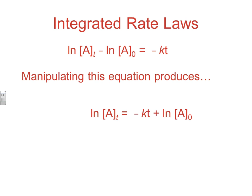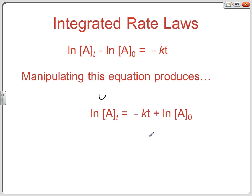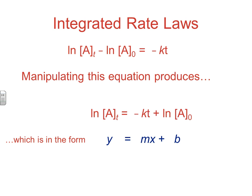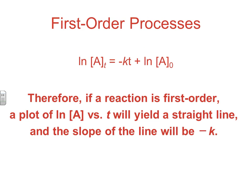This looks like a term equals a term times some other term plus our y-intercept — essentially the y equals mx plus b form of the equation. So what we really have here is y equals mx plus b. If we graph the natural log of A versus time and we get a linear relationship, then we know it's first order.